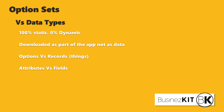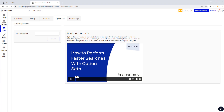Option sets and data types share different terminologies but are effectively the same thing. In data types we have records - sometimes Bubble calls them 'things' - while in option sets they're called 'options'. One of the most powerful features of option sets is attributes, which you can think of as equivalent to fields on standard data types, allowing you to store additional information about each option.